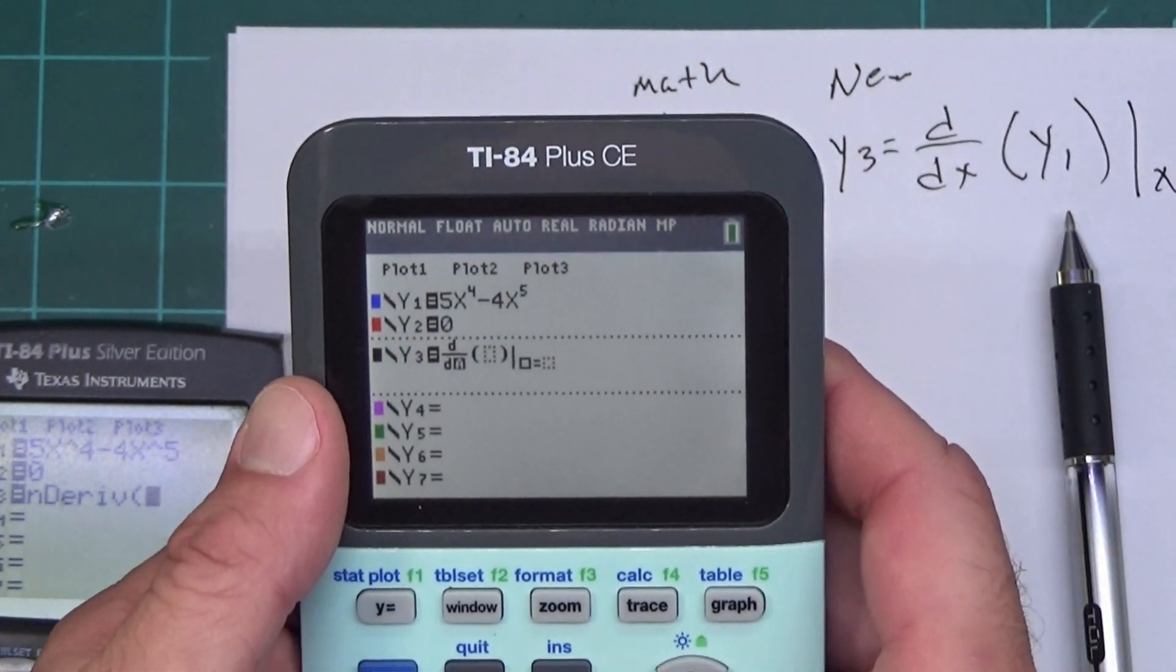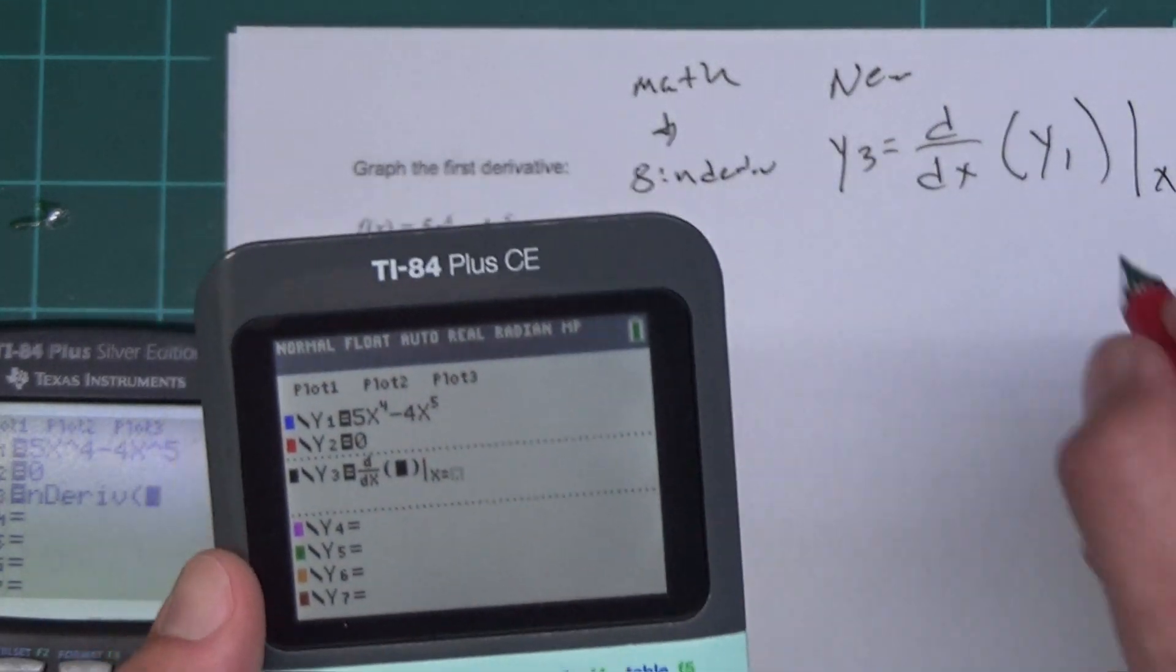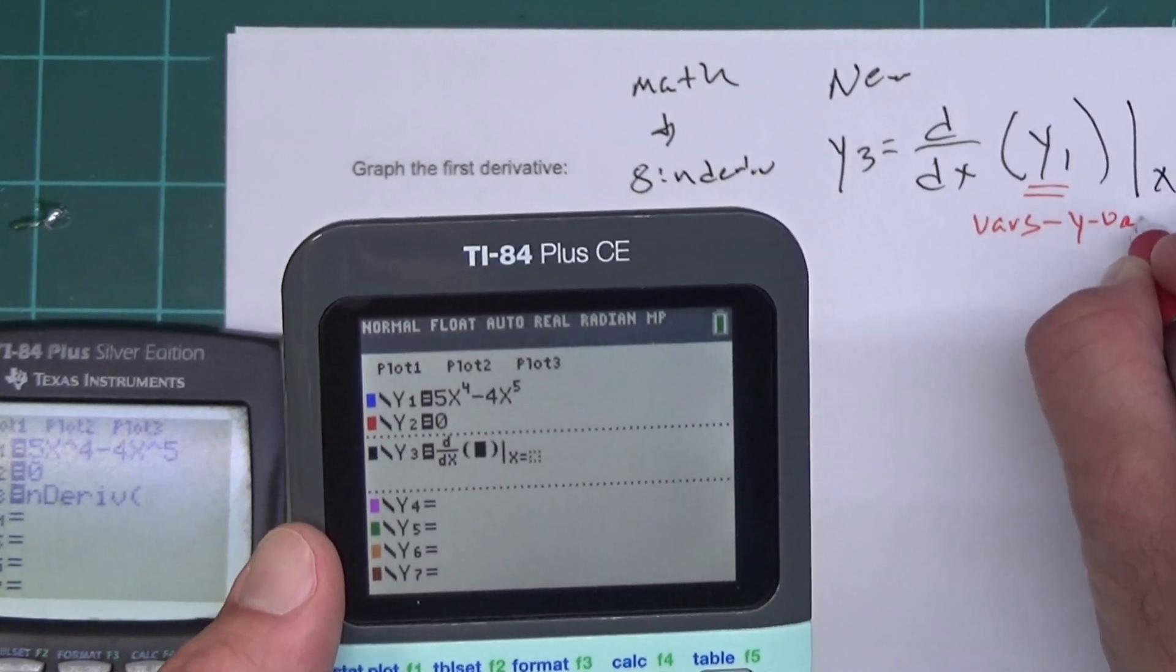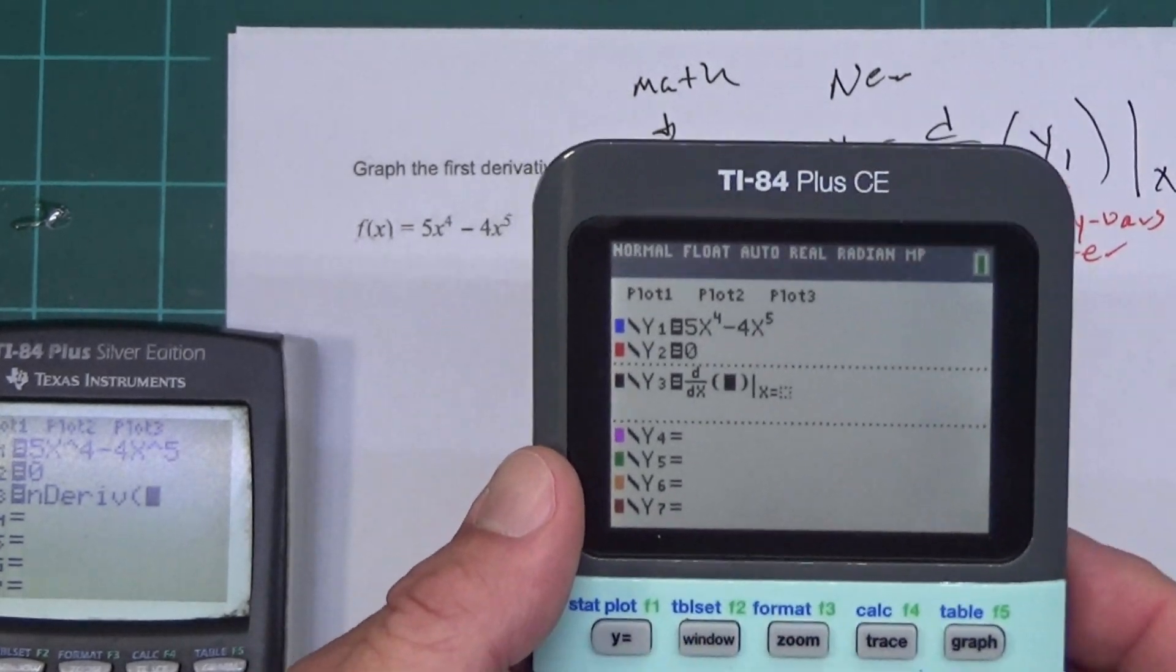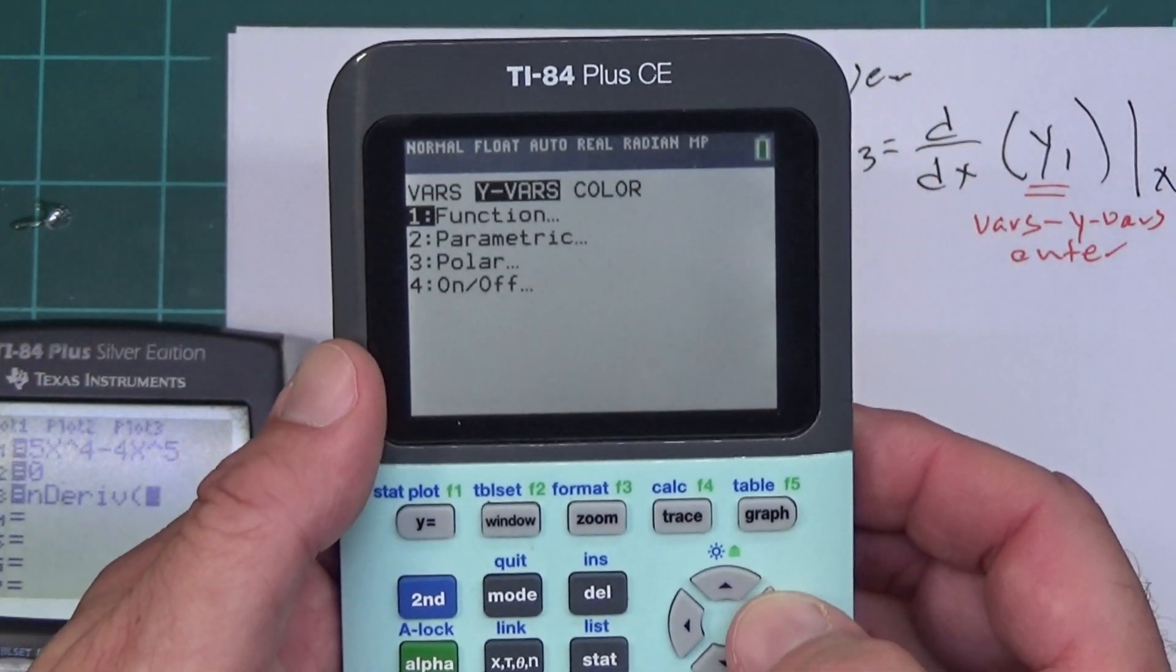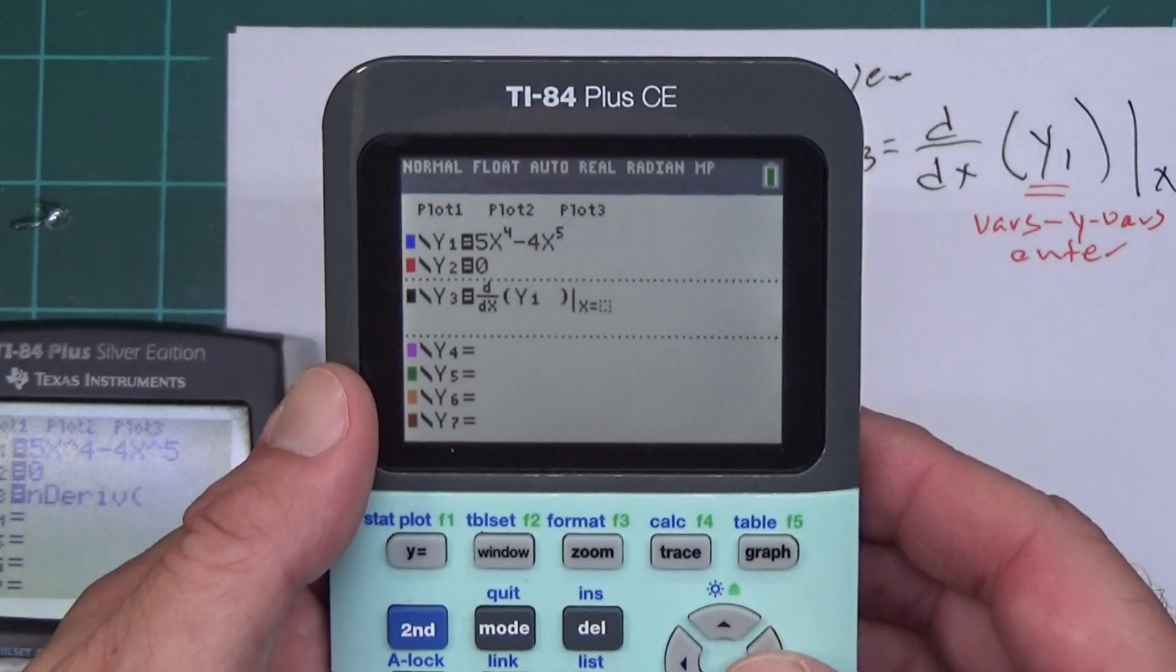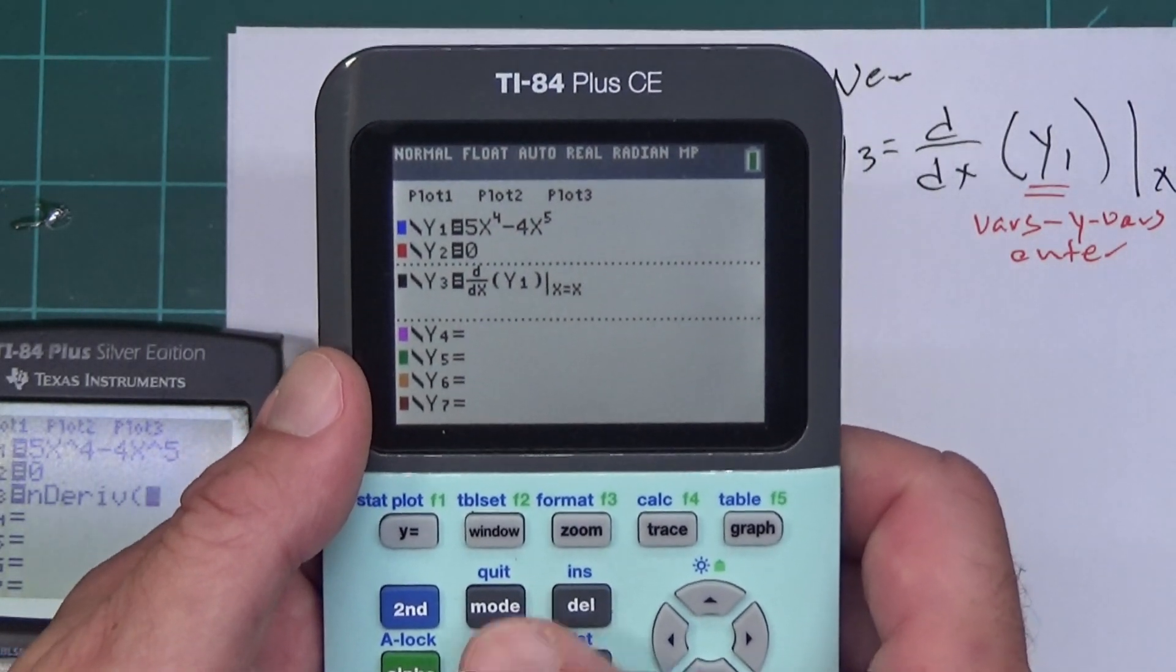The x is easy. There's an x button right here. To get the y1, and it's the same on the old 83's, 84's, you press vars over to yvars and press enter. And that will give the y1 vars, which is right here, over to yvars. You press enter. And see, there's the y1. You press enter and it sticks it in there. And I just got to come down here and add an x.